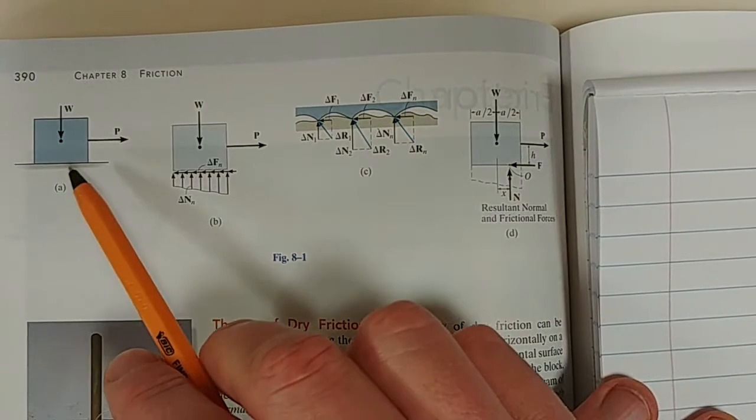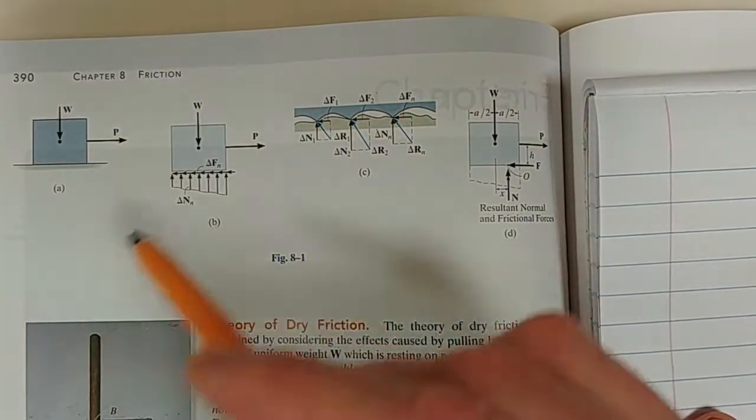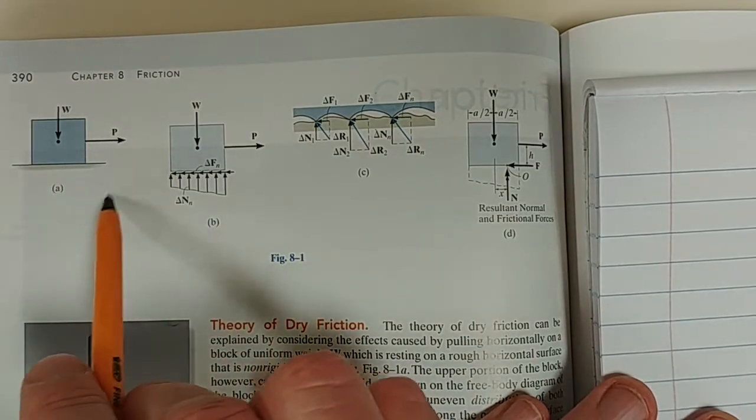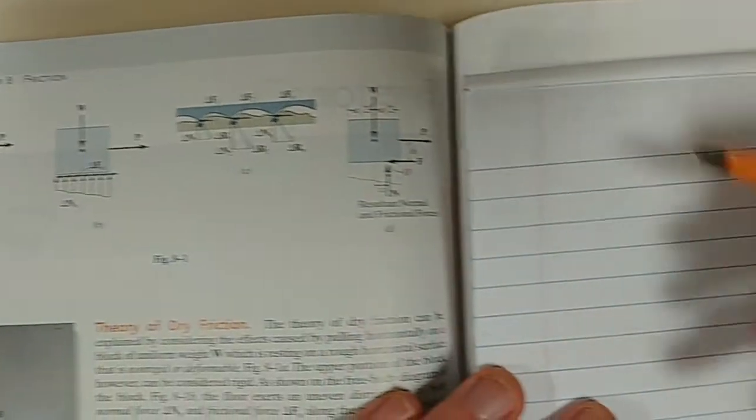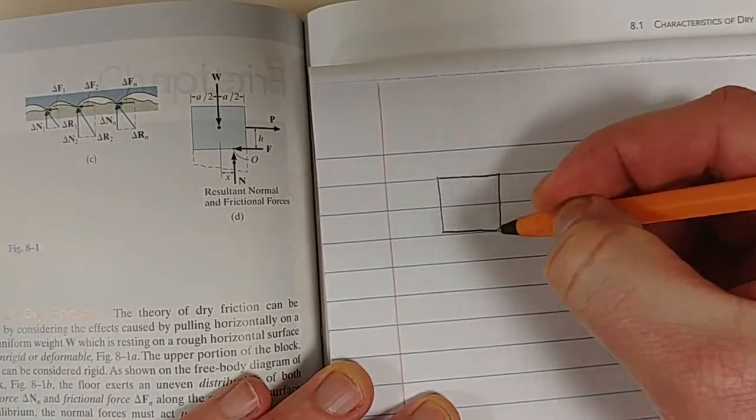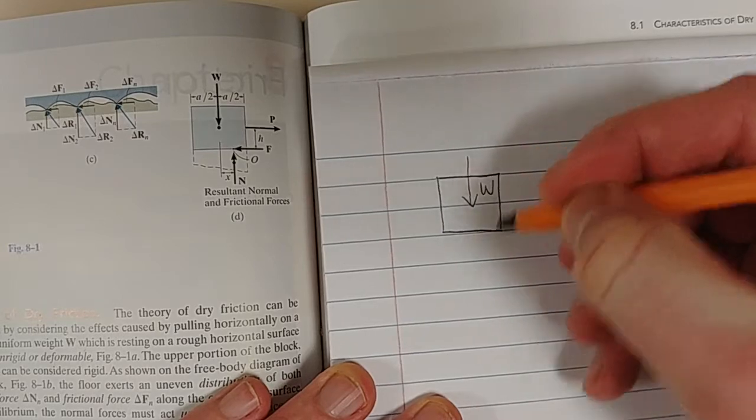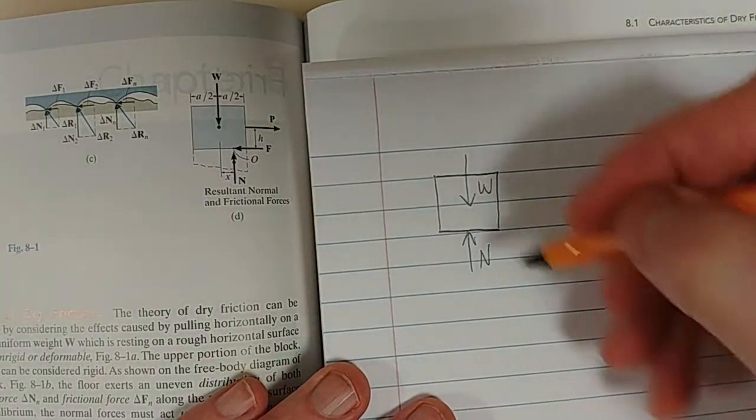So, if we can begin by looking at this figure 8.1, if we've got this block that's just resting on the surface, let's take that P away, let's take that applied force away, and let's just have a quick look here. What is our free body diagram? We just have weight down, and we have a normal force opposing it.